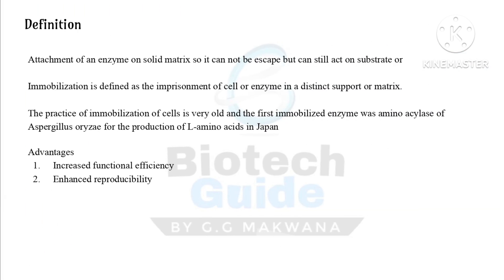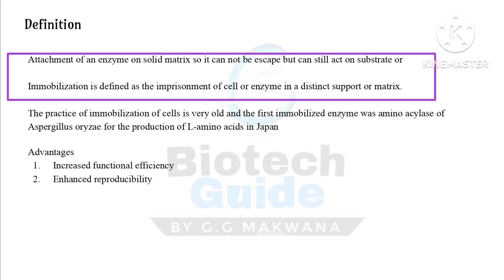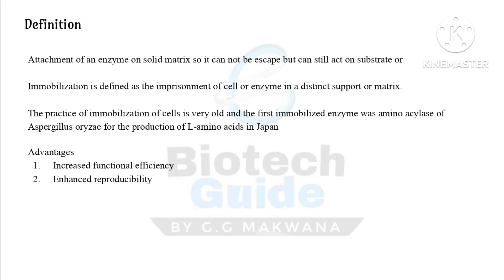Let's start with the introduction. What is immobilization? It is the attachment of an enzyme on a solid matrix so it cannot escape but can still act on a substrate. In another word, immobilization is defined as the imprisonment of a cell or enzyme in a distinct support or matrix, so the enzyme cannot change its place but still acts on a substrate.